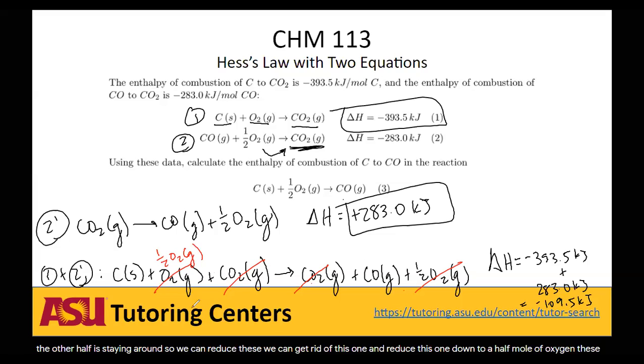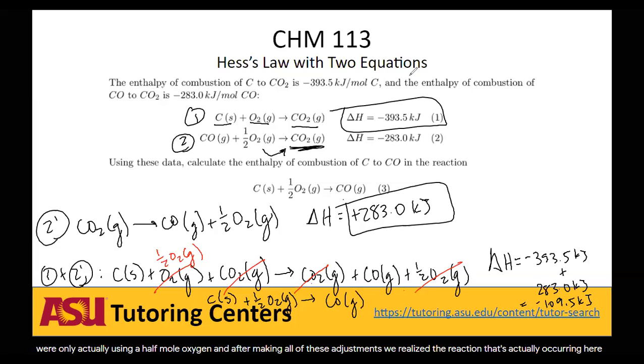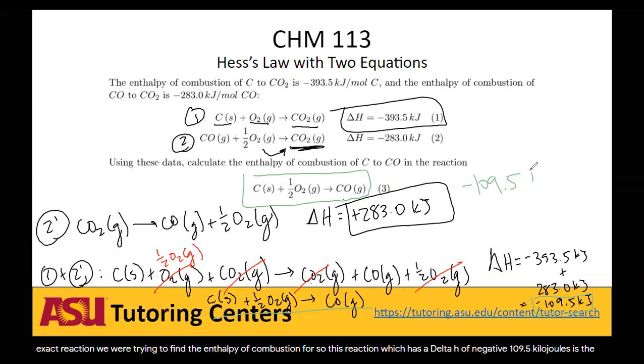...we realize the reaction that's actually occurring here is we're taking this carbon, we're reacting it with this half mole of oxygen gas, and we are producing this carbon monoxide gas. And this reaction here is the exact reaction we were trying to find the enthalpy of combustion for. So this reaction, which has a delta H of negative 109.5 kilojoules, is the reaction we're trying to find. So its enthalpy is negative 109.5 kilojoules. That is our answer. Negative 109.5 kilojoules.